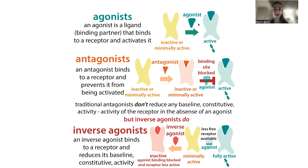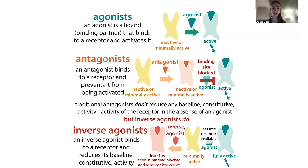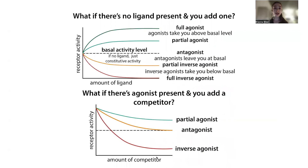To summarize: if you have an agonist, you'll get mostly active state receptors and a lot of signaling. If you have an antagonist, the active state is blocked, so you only get the system's default basal or constitutive activity level. And if you have an inverse agonist, it stabilizes the inactive form, so you get less activity than even that baseline. That's the basics of receptors and their binding partners.